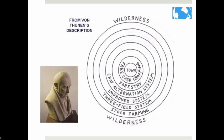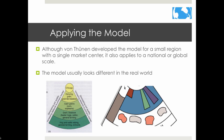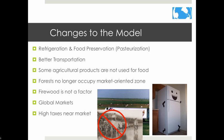A more detailed diagram based on Von Thünen's book included a way to make use of crop rotation that made more sense based on maximizing profit — he only suggested rotating crops within certain zones. Although Von Thünen developed the model for a small region with a single market, it can also be applied on a national or global scale, though the model generally looks quite different in the real world.